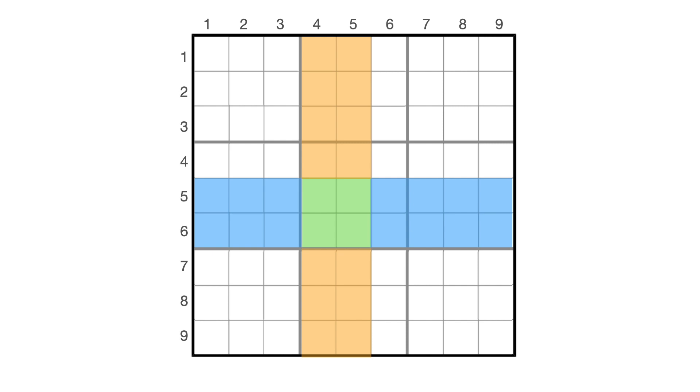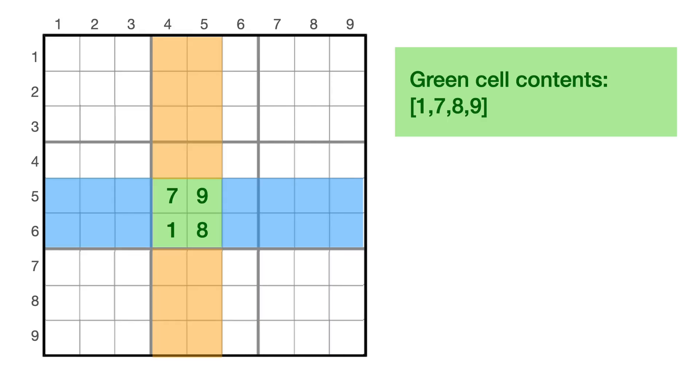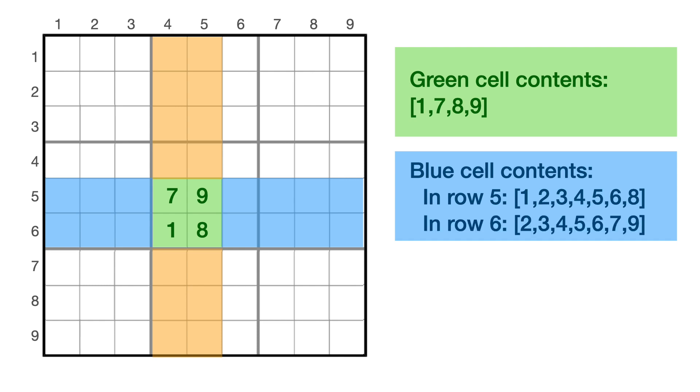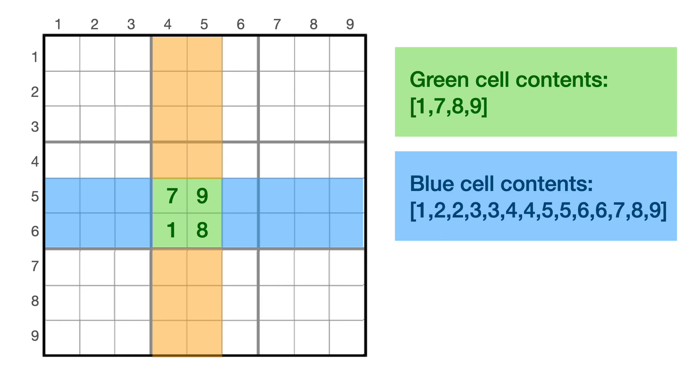Once again, it doesn't really matter which digits we're talking about. Let's call them one, seven, eight, and nine. So what digits are contained in the blue region? Well, the blue cells in row five must contain all the digits one through nine, except seven and nine. And the blue cells in row six must contain all the digits one through nine, except one and eight. So the 14 blue digits must be in some order one, two, two, three, three, four, four, five, five, six, six, seven, eight, nine.